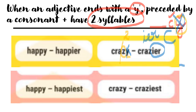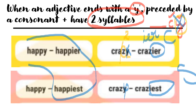So this becomes: crazy → crazier → craziest. And from the first slide: happy → happier → happiest. That is the example from the beginning — this is rule number two.